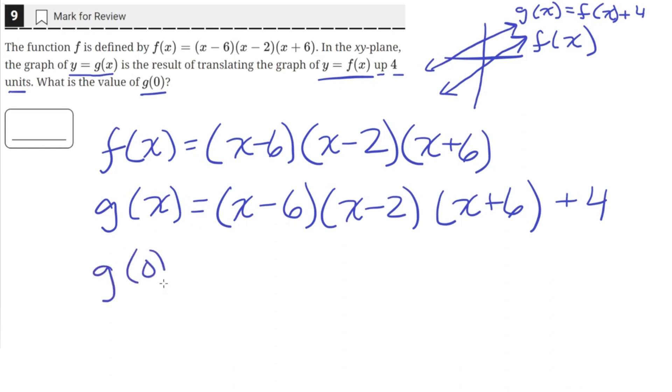So g(0) is just the value of g(x) when x is equal to 0. So 0 minus 6 is negative 6, 0 minus 2 is negative 2, and 0 plus 6 is 6, and then we still have the plus 4. So negative 6 times 6 equals negative 36, and negative 36 times negative 2 equals positive 72. And then 72 plus 4 equals 76. So the value of g(0) is 76.